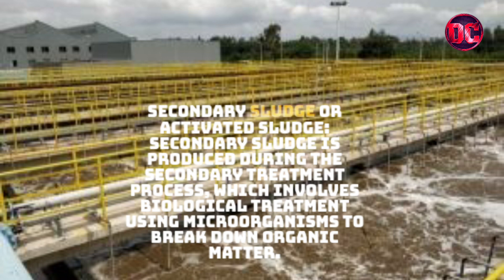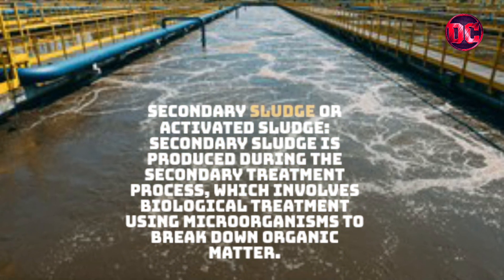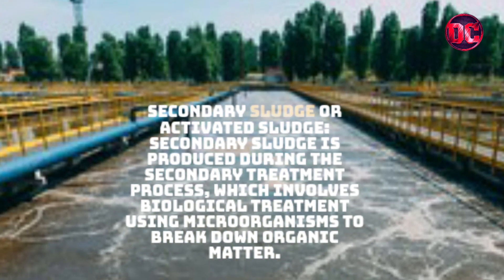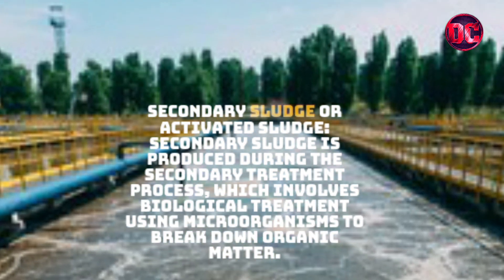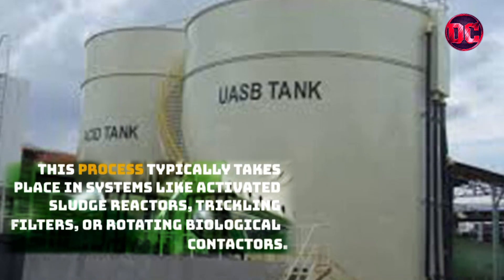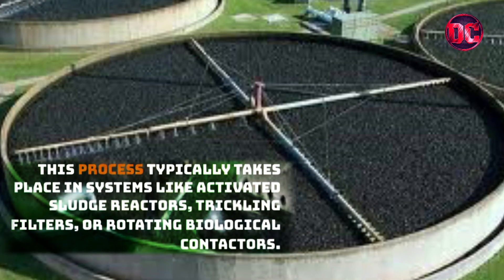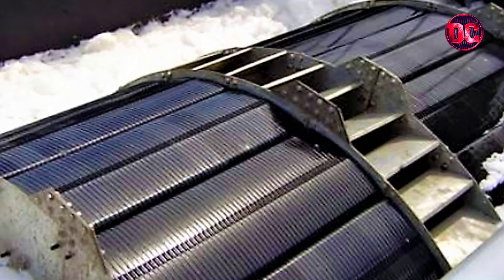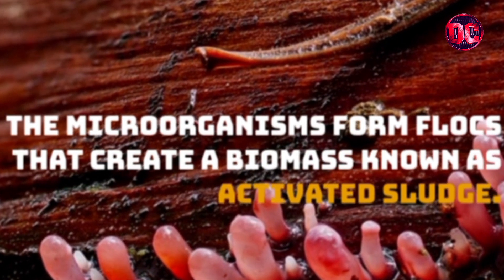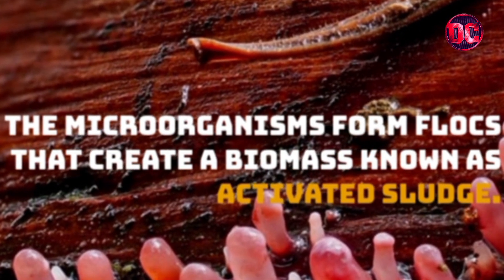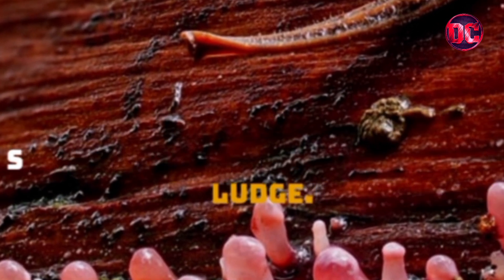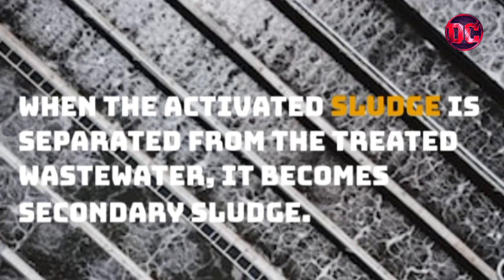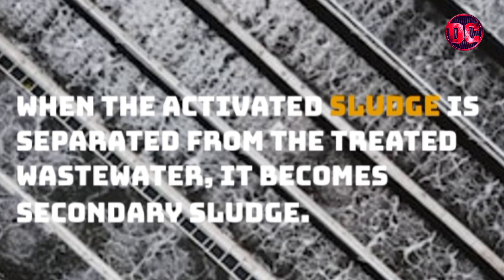Secondary sludge, or activated sludge, is produced during the secondary treatment process, which involves biological treatment using microorganisms to break down organic matter. This process typically takes place in systems like activated sludge reactors, trickling filters or rotating biological contactors. The microorganisms form flocks that create a biomass known as activated sludge. When the activated sludge is separated from the treated wastewater, it becomes secondary sludge.